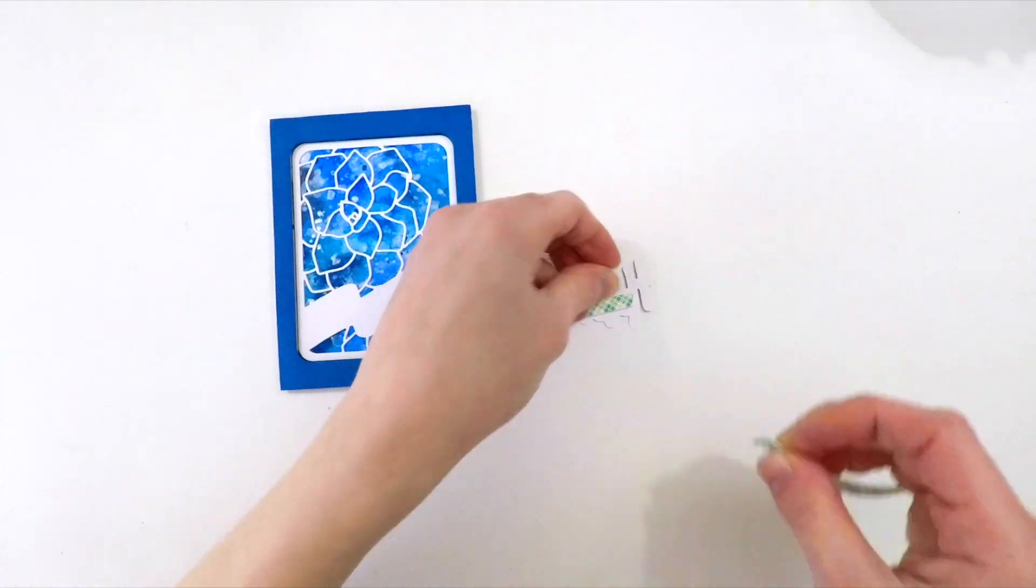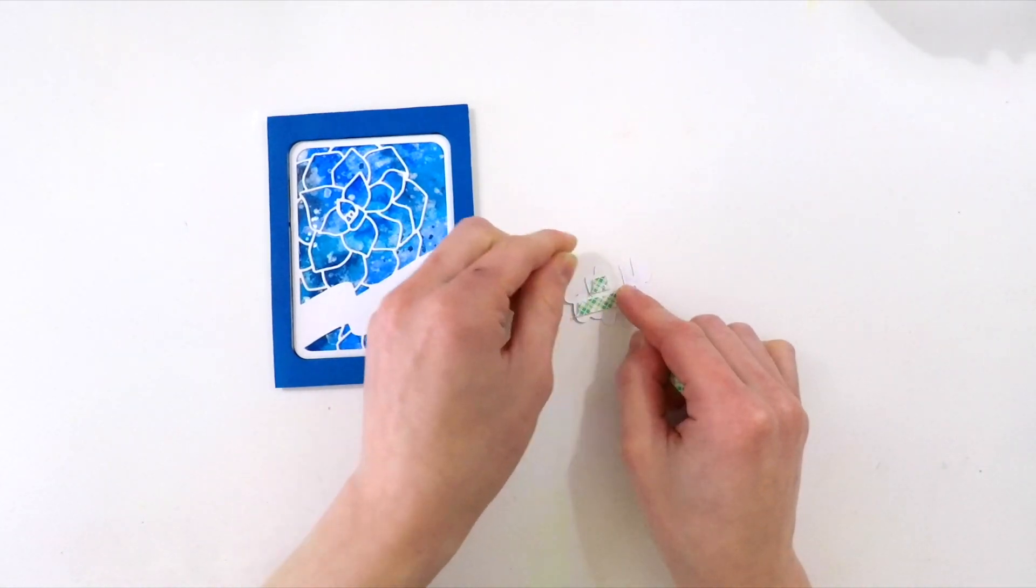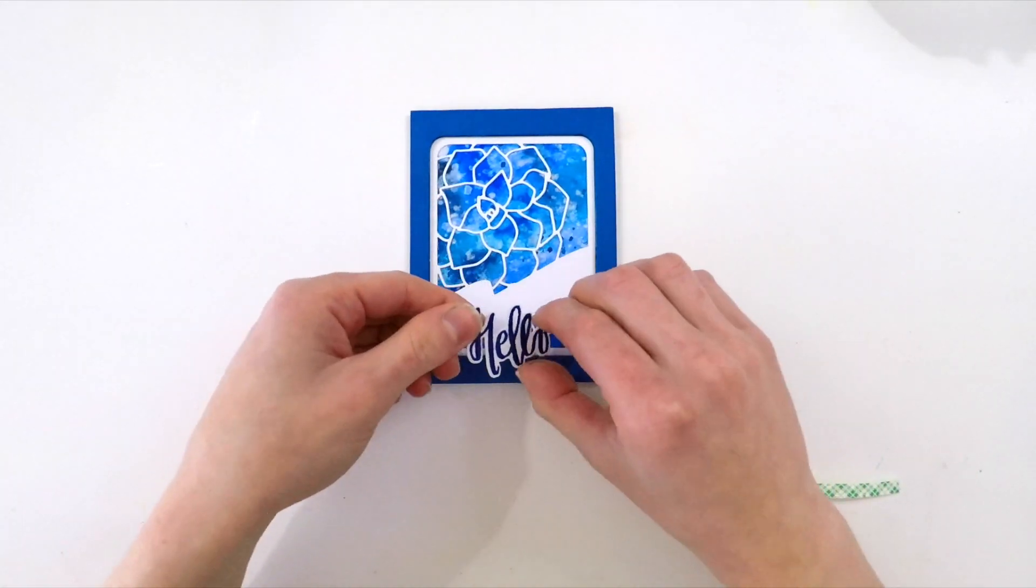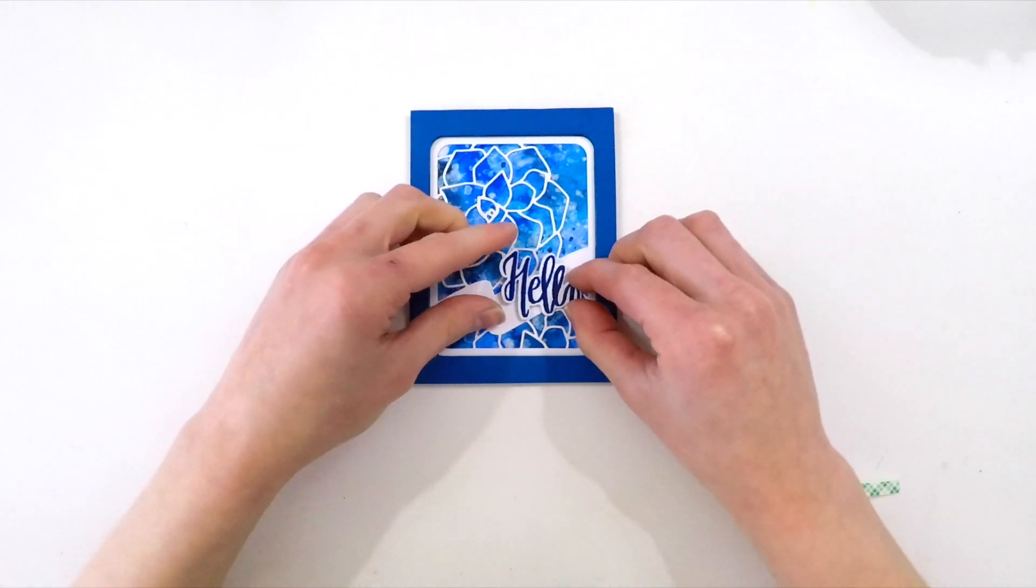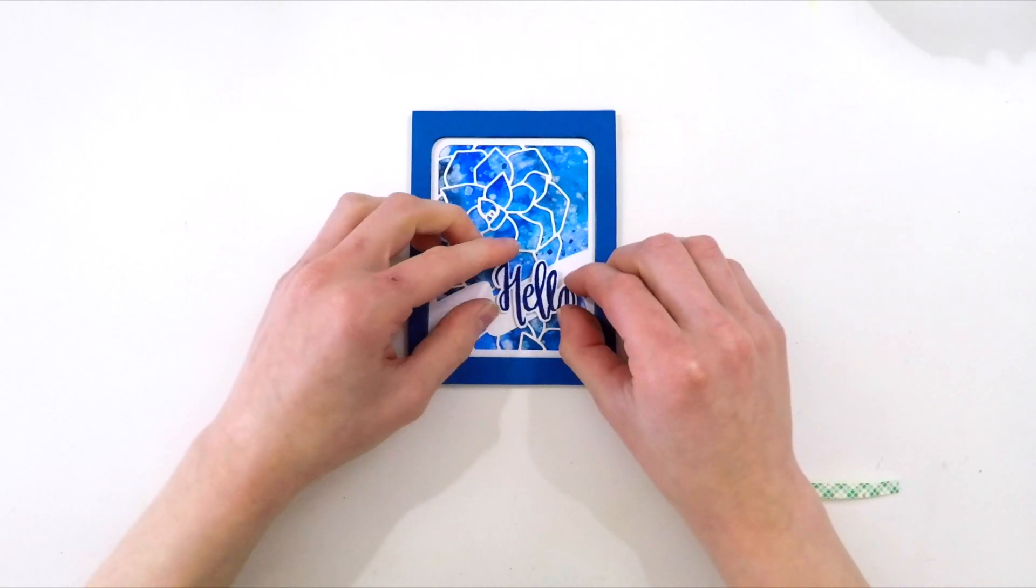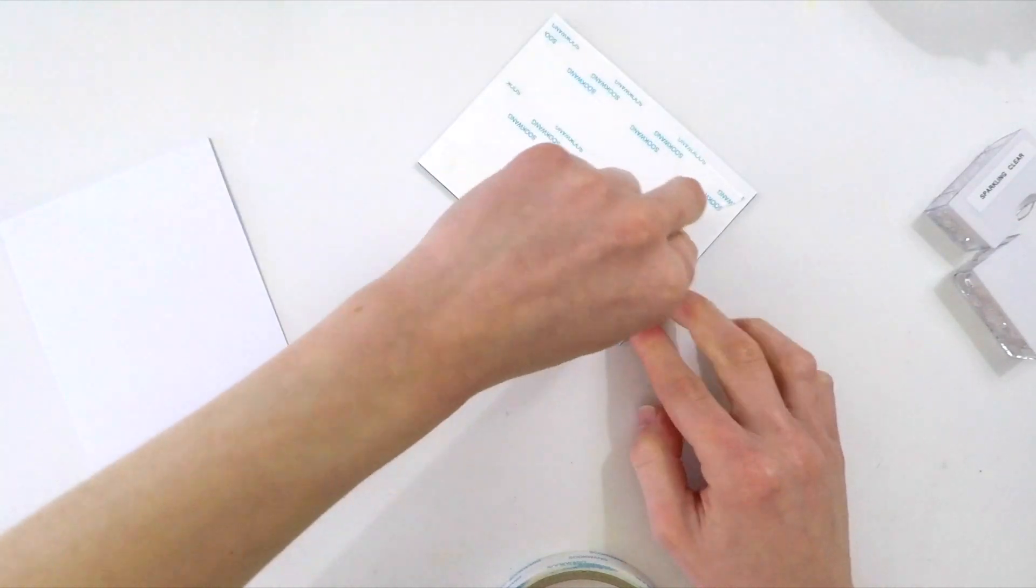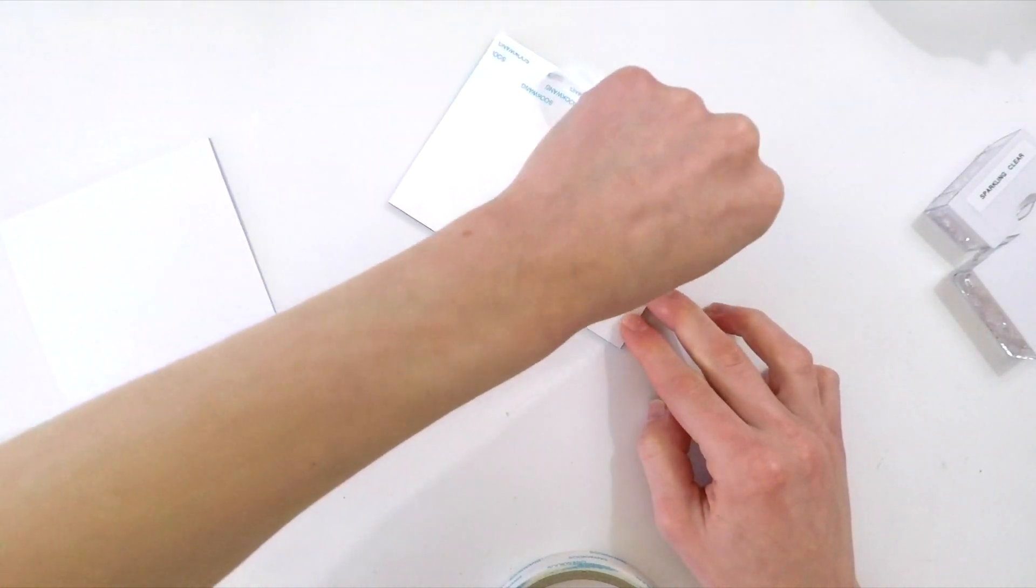I used the coordinating die to cut that sentiment out, and I'm going to pop it up off my card with some foam tape. I'll put that over top of the banner so I have a sentiment going along that area. You could use some of the sentiments included in the Succulents stamp set, which matches this die, but I wanted to use a die-cut sentiment today.